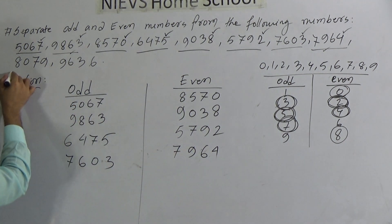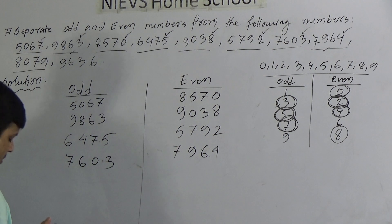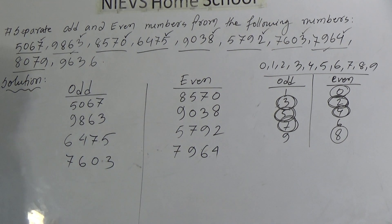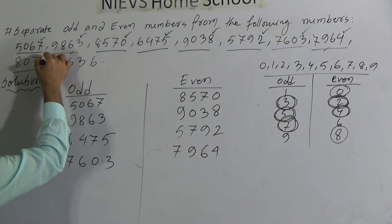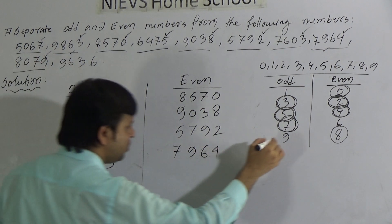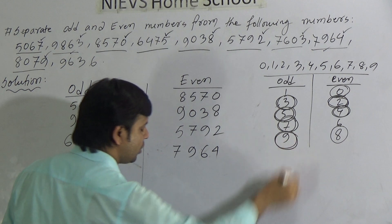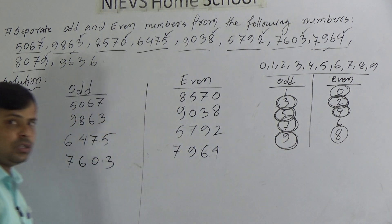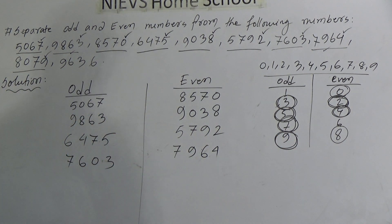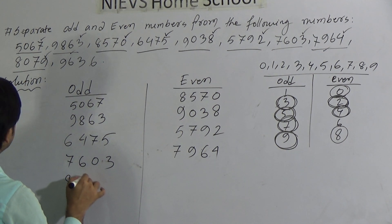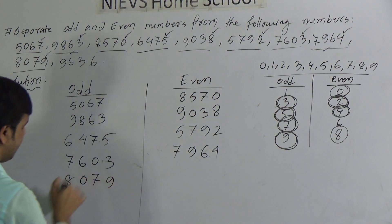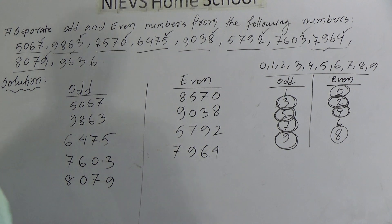Now go to the next number: 8079. Here see — 9 is in the unit place and we know 9 is odd. So the number containing 9 in the unit place must be odd. We write 8079 under odd.